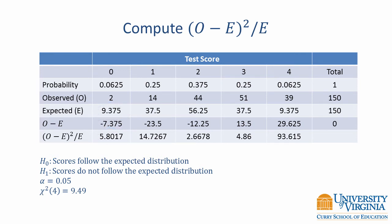For a test score of 1, if we square negative 23.5 and divide it by 37.5, we get 14.7267. Again, we can repeat this calculation for the remaining score levels.